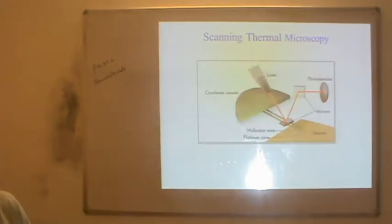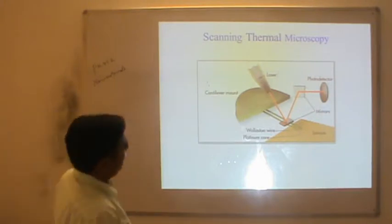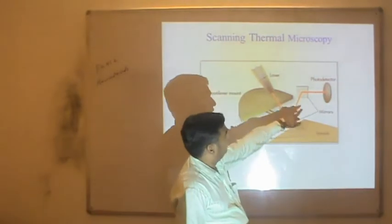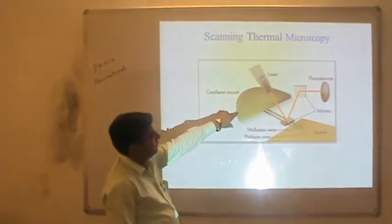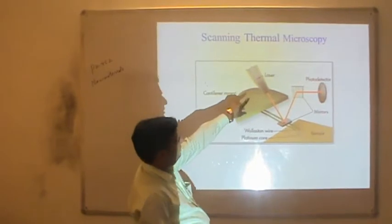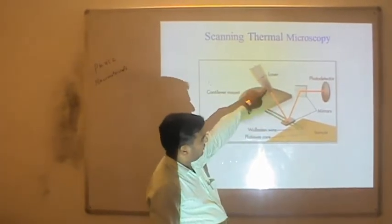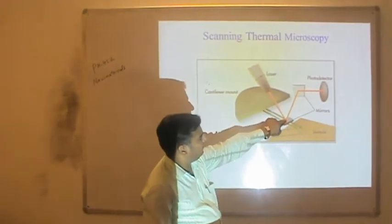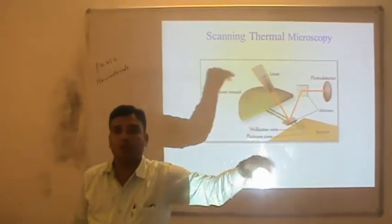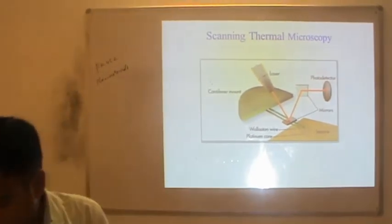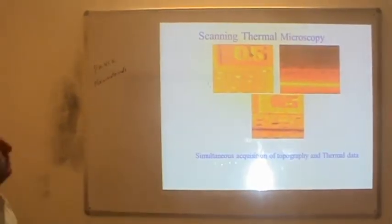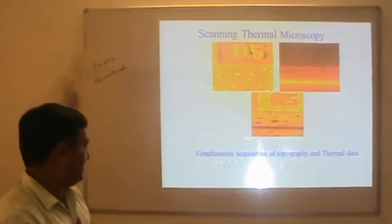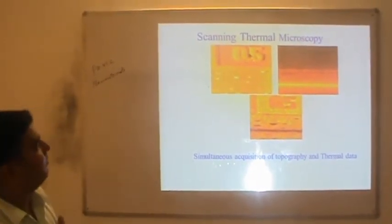This is the simplest diagram to understand scanning thermal microscopy: there is the tip, the sample, the cantilever mount where the cantilever is mounted, and the laser beam. Whatever change is observed during scanning of the surface, the laser is detected by the photodetector to get the information about the sample surface. These are the images obtained from scanning thermomicroscopy showing simultaneous acquisition of topography and thermal data.